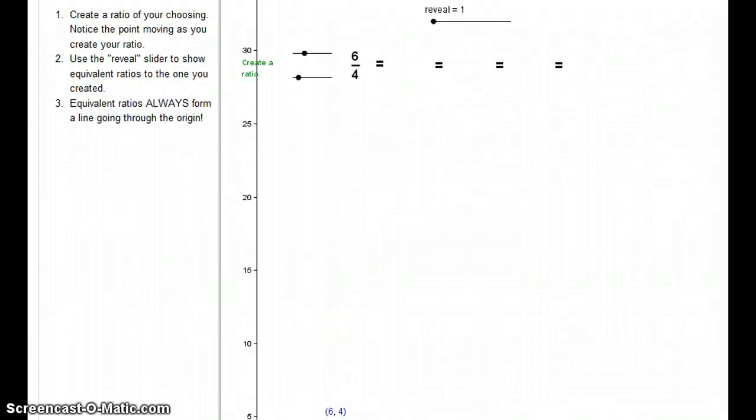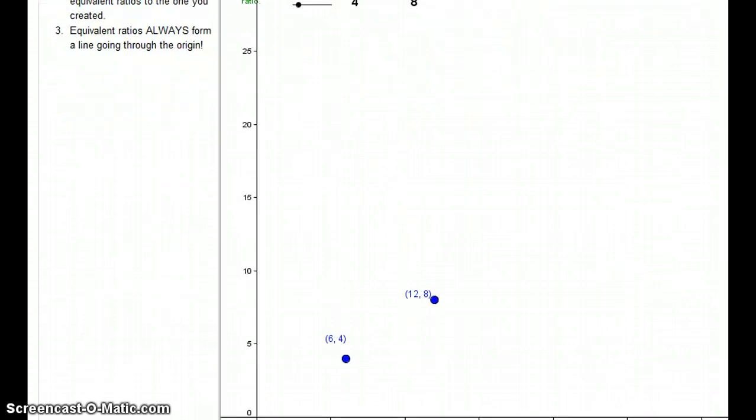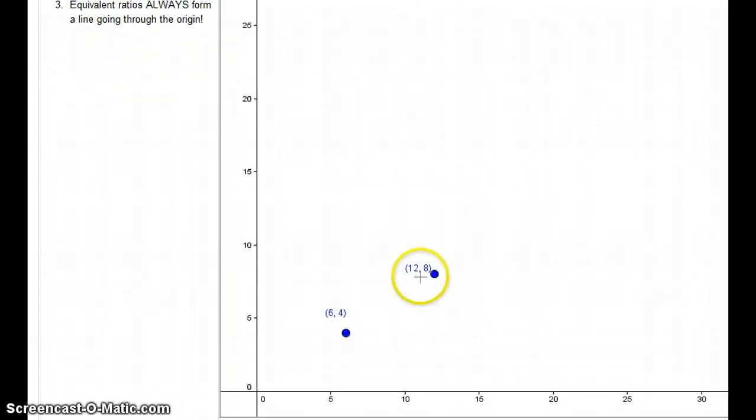So what's going to happen if we reveal another equivalent ratio? We have 12 to 8. Can you see that this is being multiplied by 2? 6 times 2 is 12, 4 times 2 is 8. As you can see, it's been plotted here at a point of 12, 8, where 12 was the numerator - that's the x-coordinate. 8 is the denominator, and that is the y-coordinate.